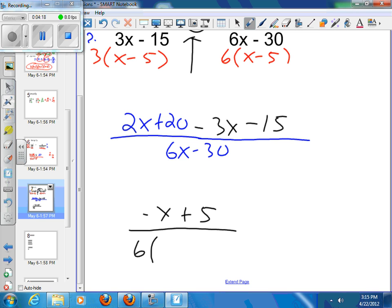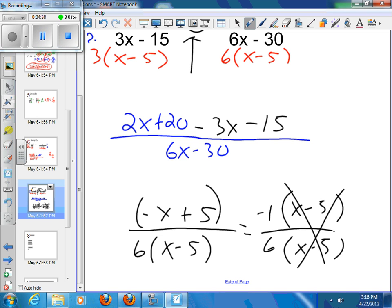And then when we factored out the bottom, we had the 6(x - 5). And we're really close here. We've got -x + 5. So if you just take out that negative sign, that becomes x - 5. And then 6(x - 5). That reduces, and our final answer is -1/6. So you've got to keep going until you're all the way to the end, you've reduced everything you've possibly reduced.